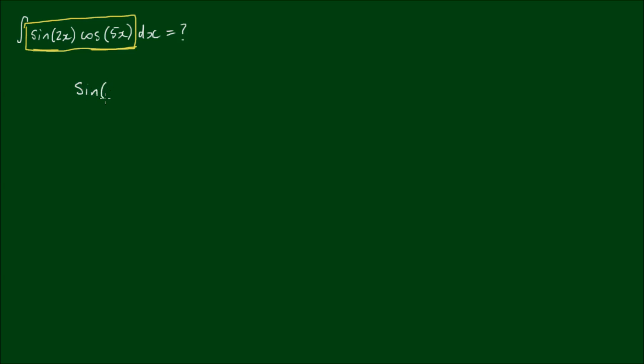And the specific one that I'm going to need here is the product-to-sum formula in that the sine of u by the cosine of v can be expressed as a half of the sine of u plus v plus the sine of u minus v.